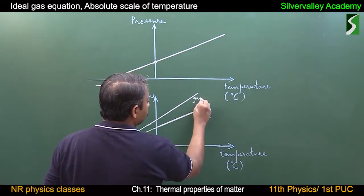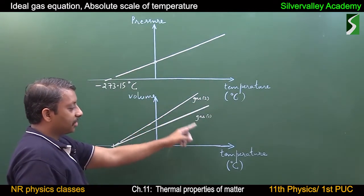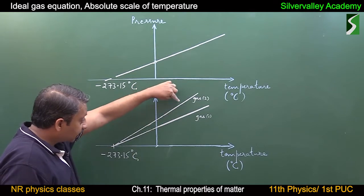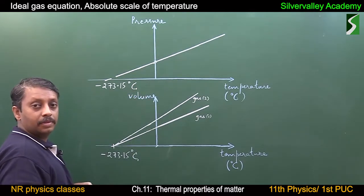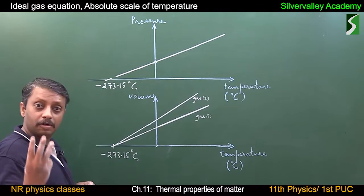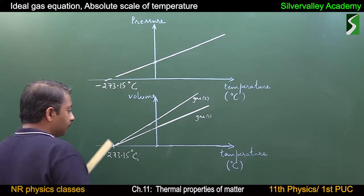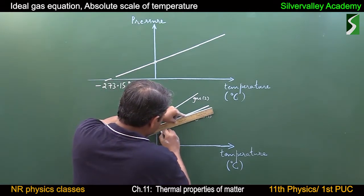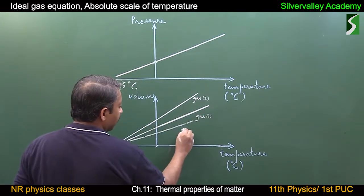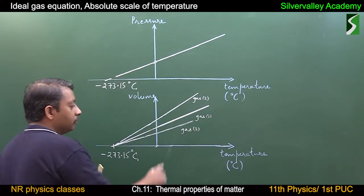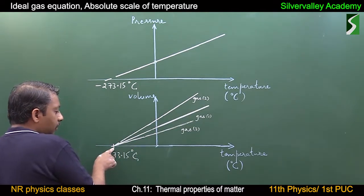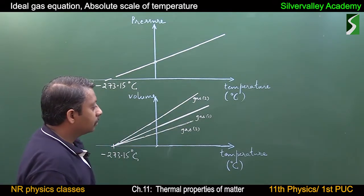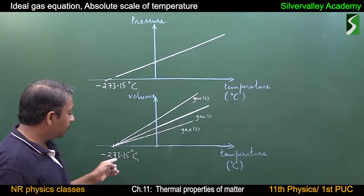This is the surprising fact: for the second gas and for a third gas, the nature of the graph is the same and the x-intercept is also the same. For all gases, at minus 273.15 degrees Celsius, volume becomes zero. This temperature is the same for all gases.